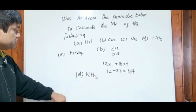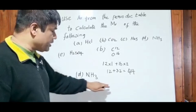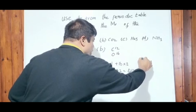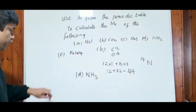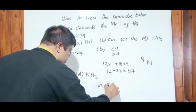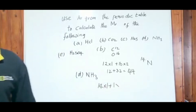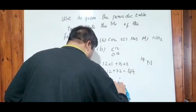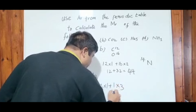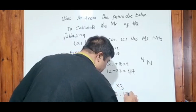Now let's try ammonia — NH₃. When you look at the periodic table, nitrogen is 14. Always take the bigger number. So nitrogen is 14 times 1, plus hydrogen: the AR of hydrogen is 1, times by 3. So 14 plus 3 equals 17.